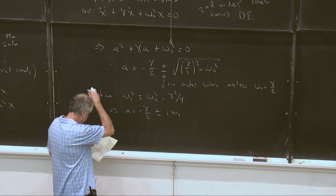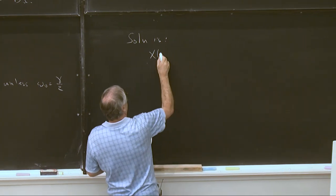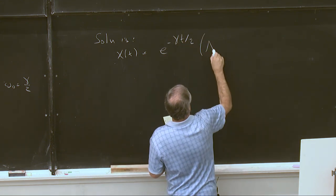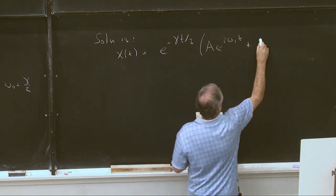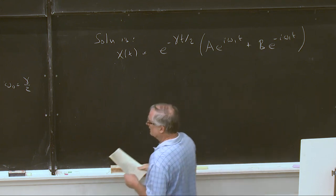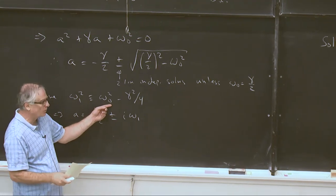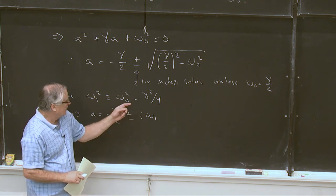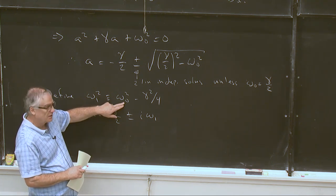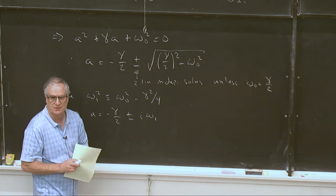So let's see. Solution. We have a solution. X of t is equal to e to the minus gamma t over 2 times a e to the i omega 1 t plus b e to the minus i omega 1 t. We already see that the oscillation isn't quite at omega naught. It's shifted. In fact, it's shifted lower in frequency than the natural frequency. The damping is dragging on the system is kind of how you look at that. It's kind of trying to resist the motion. It's slowing the frequency down.